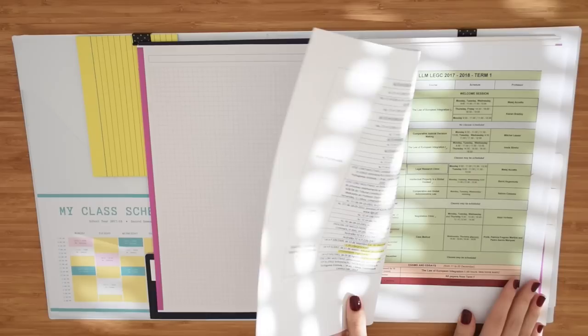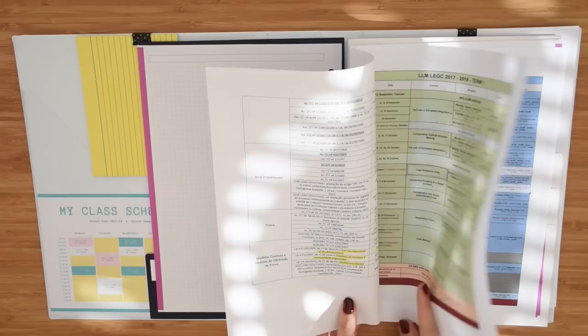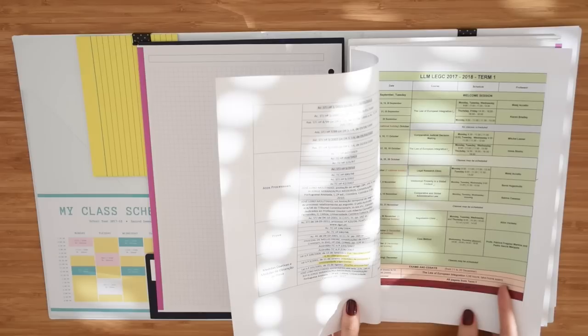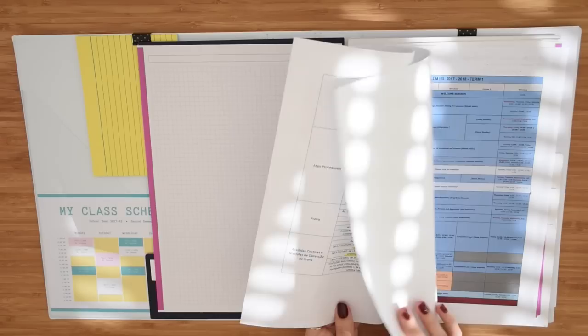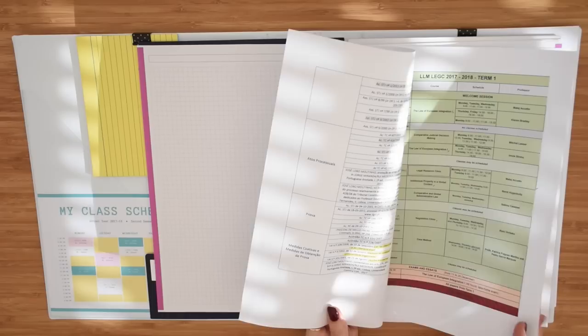This is also an example of another kind of important document you can have. For example I have here calendars for my current master's classes for the entire winter semester so this also comes in handy whenever I need to organize my time for future classes and if I need to see the time schedule and classroom for each one of my classes.